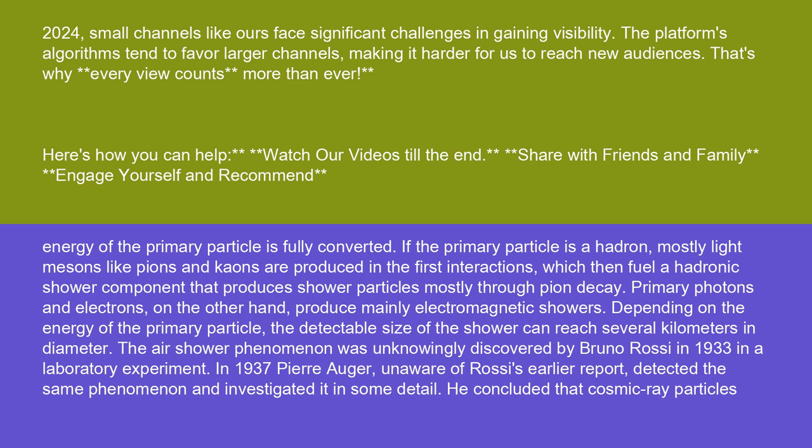Primary photons and electrons, on the other hand, produce mainly electromagnetic showers. Depending on the energy of the primary particle, the detectable size of the shower can reach several kilometers in diameter.